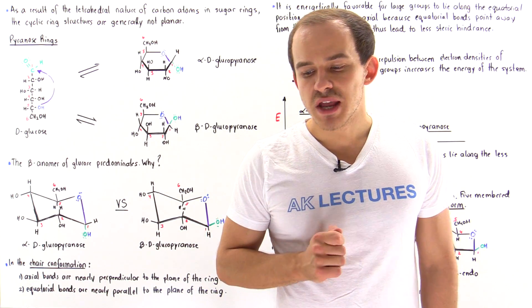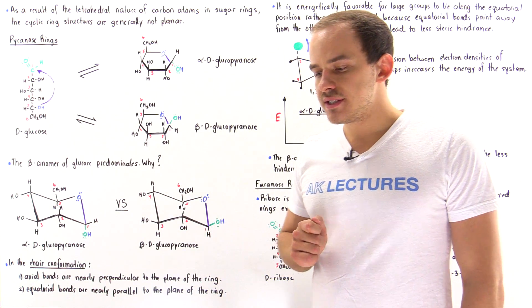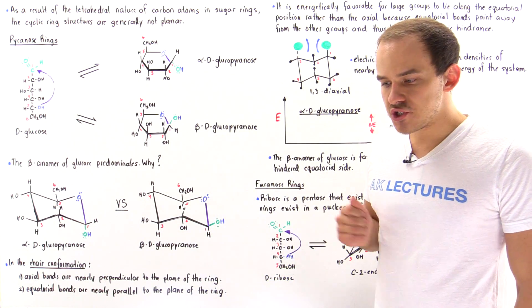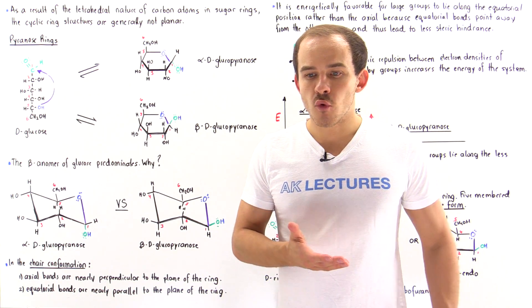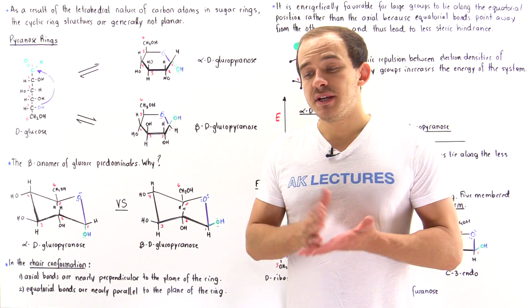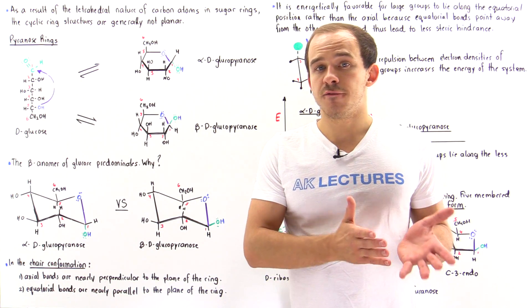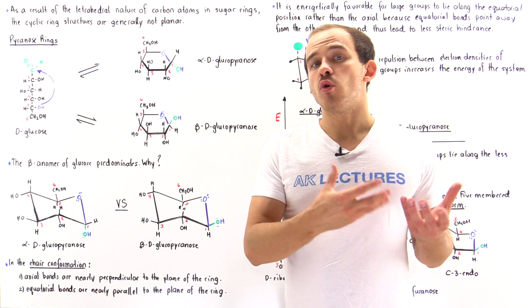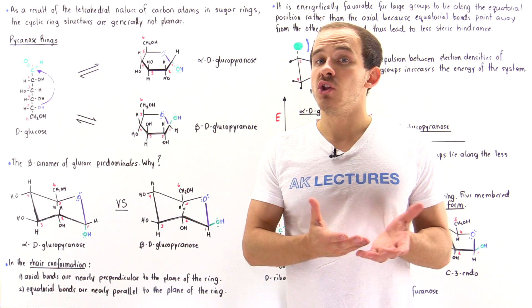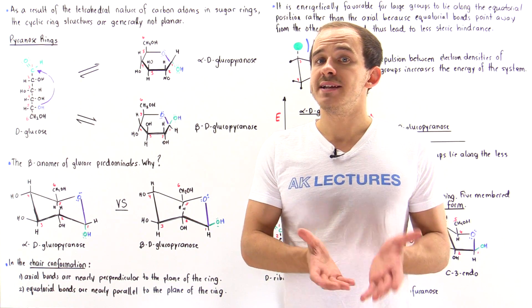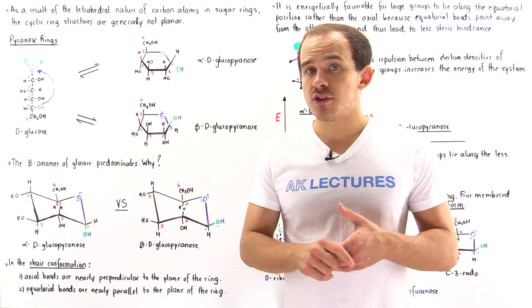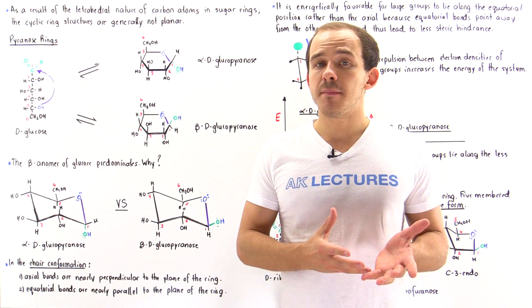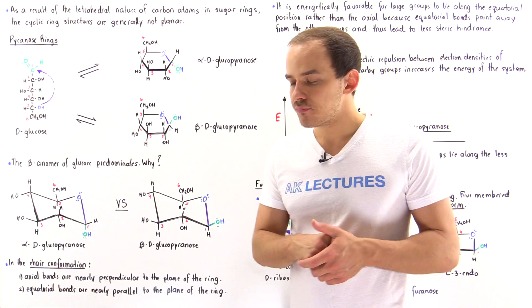Monosaccharides have a choice. They can either exist in the open chain form or in the cyclic form. And because the cyclic form is more stable and lower in energy, it's the cyclic form of the sugar that will predominate.